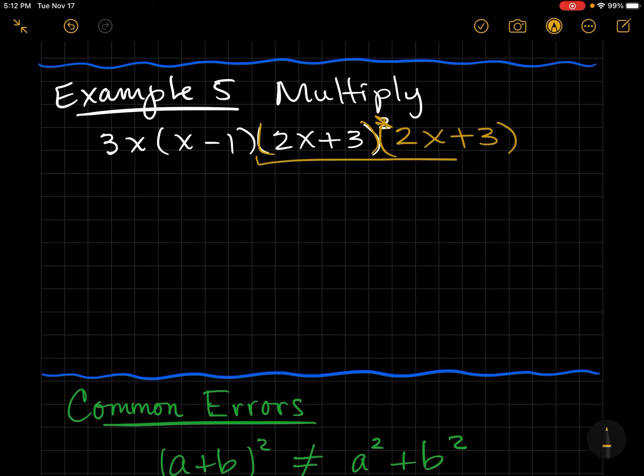I'm going to go ahead and do those two first. So I have first is 4x², outer is 6x, inner is 6x, so that gives me 12x. So notice that just doubles. And then that's 9. And now you can do it in any order you want. You can multiply the 3x into the x - 1, but I think I'm going to wait.